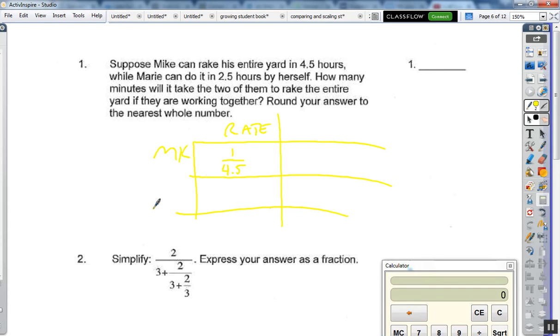And then Marie can do the same yard at a rate of 1 over 2.5 in one hour. So in one hour, this is how much Mike does, and this is how much Marie does. Now, I don't love the fact that we have decimals inside the fractions, so I'm going to multiply both of these by 2 over 2 to get fractions that look a little bit better. So we have 2 over 9 over here, and over here we have 2 over 5.